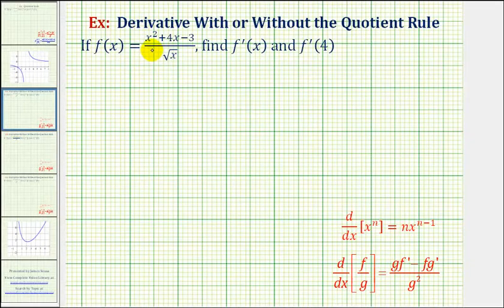If f of x equals the quantity x squared plus 4x minus 3 divided by square root x, we want to find f prime of x, the derivative function, and f prime of 4.